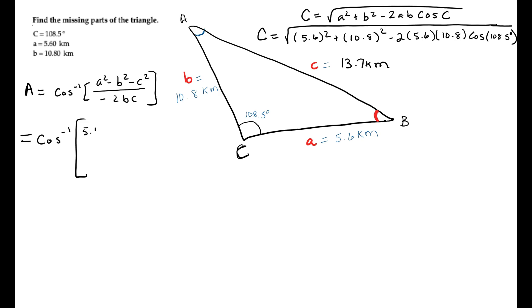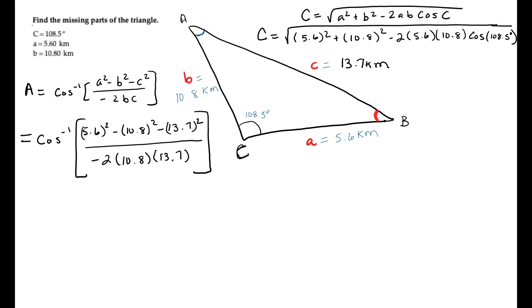So A is 5.6 squared minus B which is 10.8 squared, minus C which is 13.7 squared, all divided by negative 2 times 10.8 times 13.7. And you plug all of that in on your calculator.